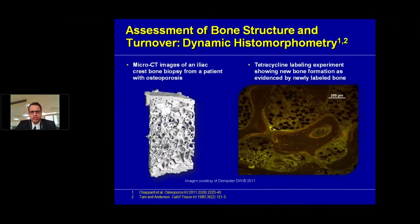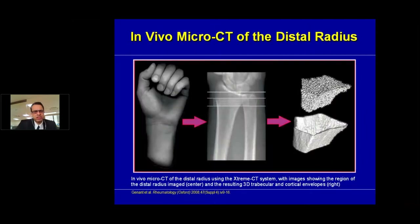Dynamic histomorphometric measurements allow us to look at bone turnover in addition to bone structure. We can use techniques like tetracycline labeling — tetracycline is taken up by bone very easily and can be used to label bones, providing contrast and revealing various microstructures in a more refined fashion. This is demonstrated by micro CT of the radius, where you can look at both cortical and cancellous bone along with bone density and structure — a fairly detailed and specific way of identifying bone density.